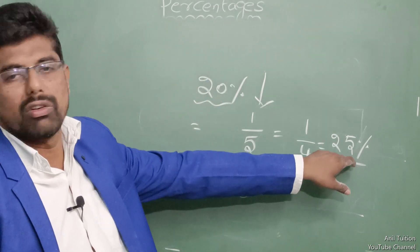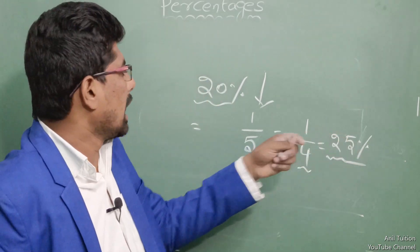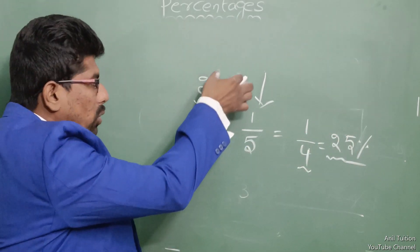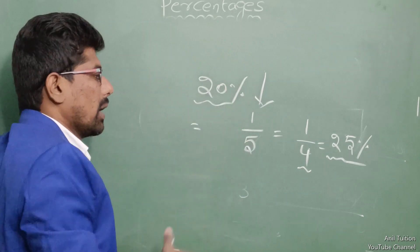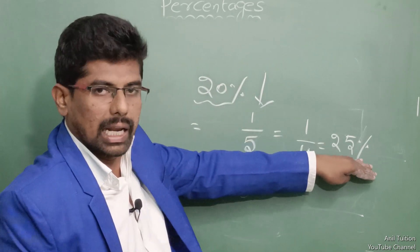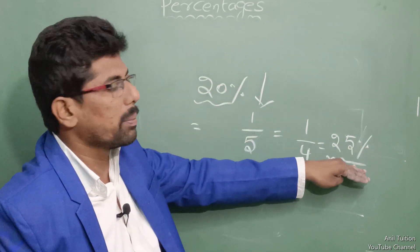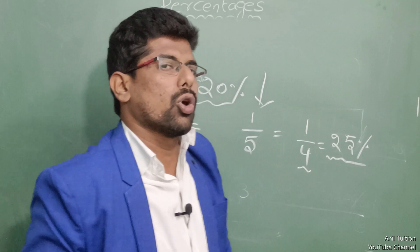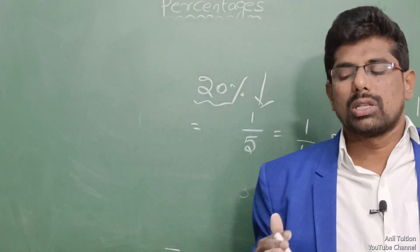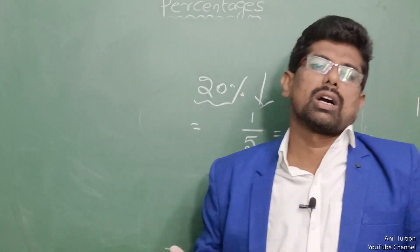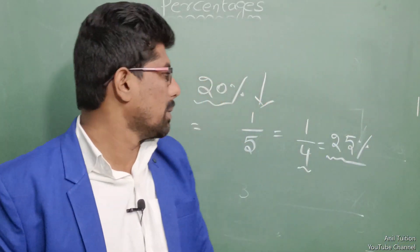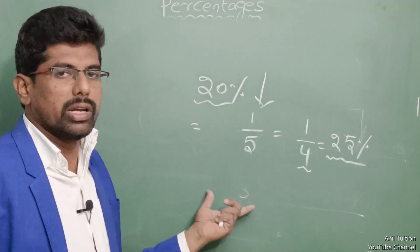The answer is 25%. So if you have 20% fewer workers, the remaining employees need to increase their time by 25%. The company uses these percentage applications.